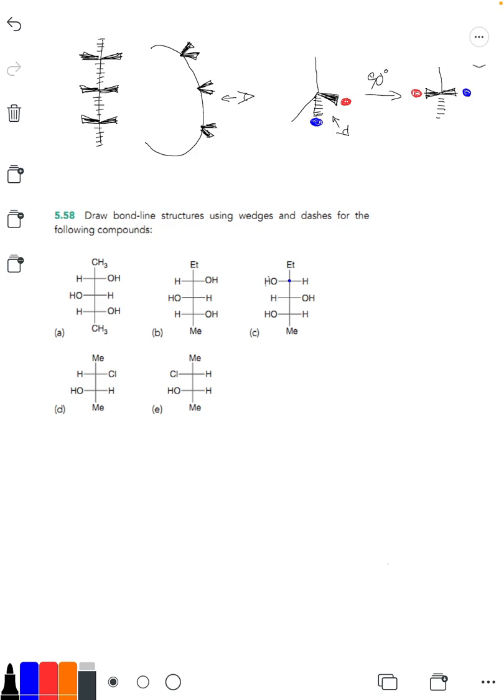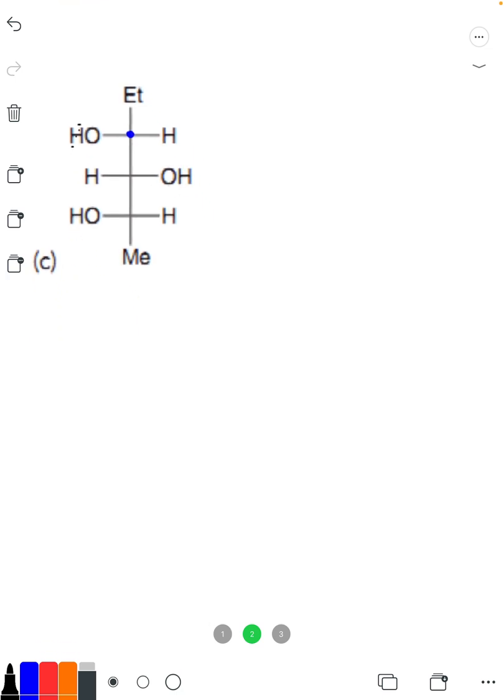I'm going to focus on problem C right here, and what we want to think about doing is thinking about drawing this molecule with wedges and dashes and representing it in an appropriate stereochemical way.